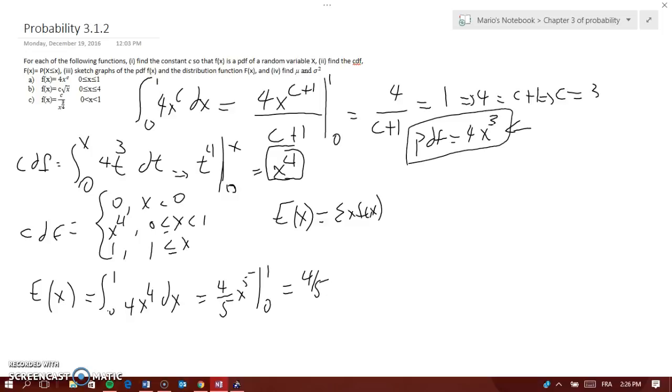Now, the variance, which is sigma squared, I'm going to multiply the PDF again by x squared, because you have to find expected value of x squared. So you have to do the integral from 0 to 1, 4 x to the power of 5, which is that, times x squared, dx. And that would be equal to 4 over 6, x to the power of 6, from 0 to 1, and that would be equal to 4 over 6.